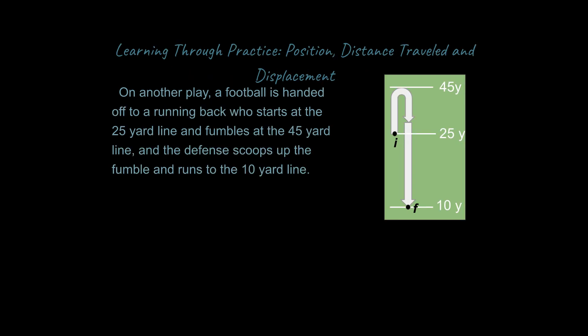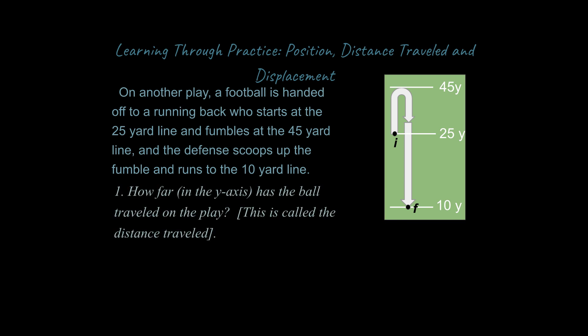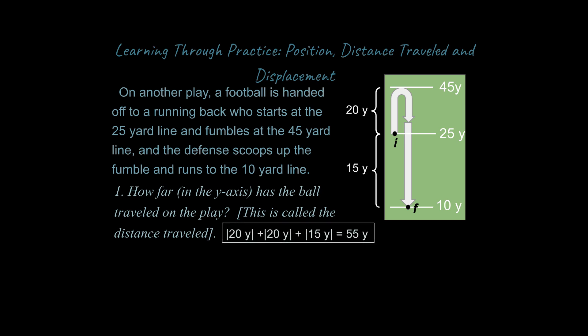Let's try another example. On another play, a football is handed off to the running back who starts at the 25-yard line and fumbles at the 45-yard line. A defender scoops up the fumble and runs to the 10-yard line. How far on the y-axis has the ball traveled — the distance traveled? You would have 20 yards, plus another 20 yards back to where he started, plus another 15 yards, for a total of 55 yards. That's how far the ball has actually traveled.